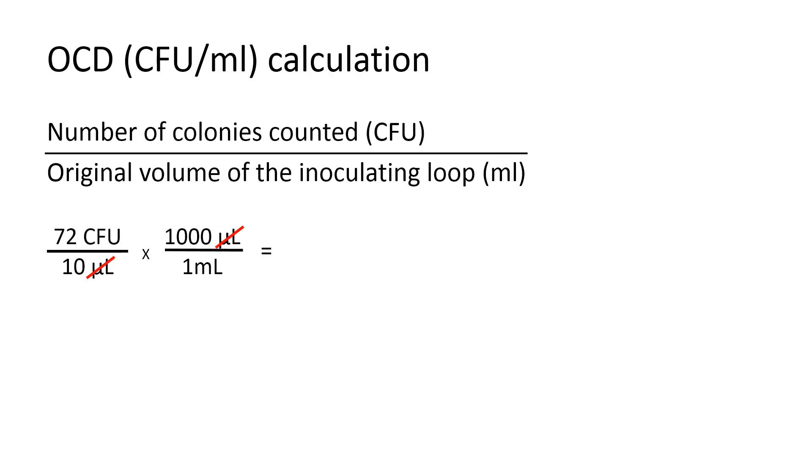Next, we can cancel out the zeros on top and bottom. We then simplify the way that the fraction looks and we obtain an answer of 7,200 colony forming units, CFU, per milliliter.